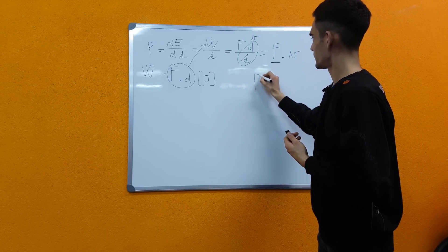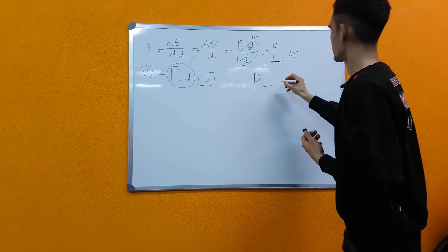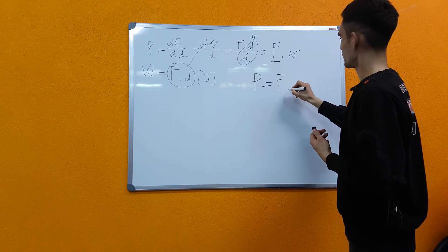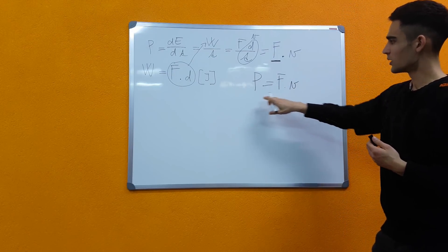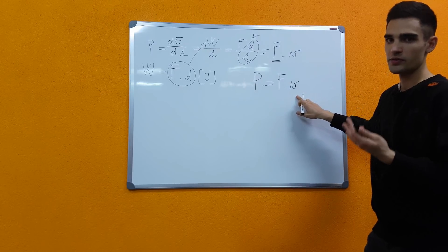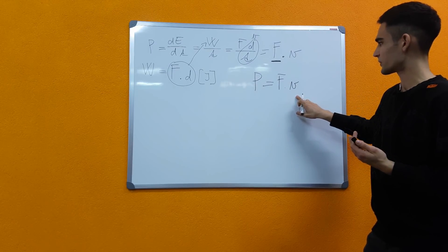So to sum it up, power equals force times velocity. So what do we get out of here and why do we want to measure power in the first place?